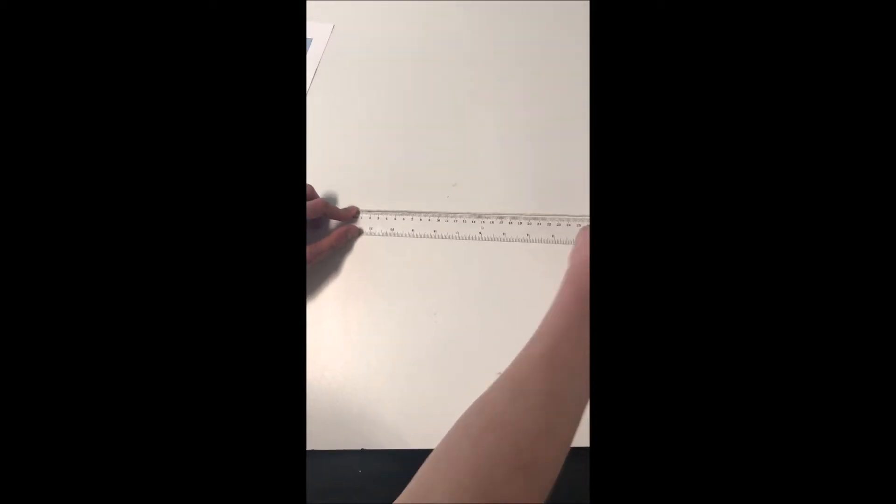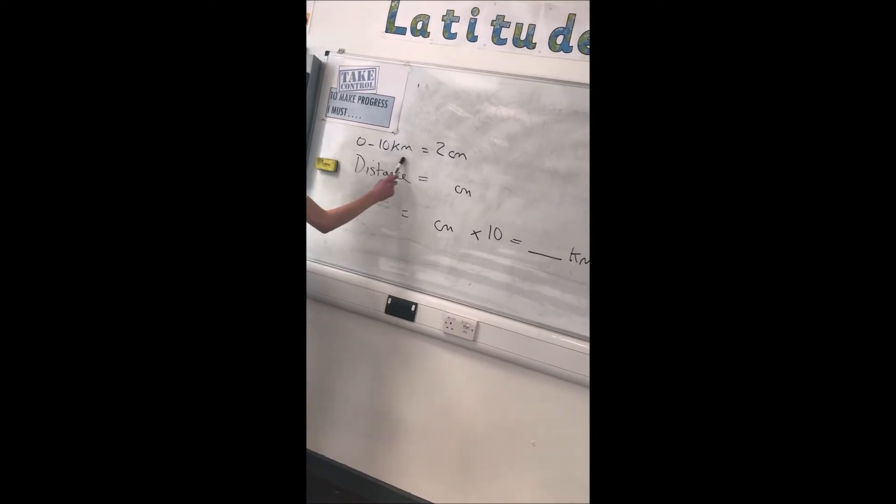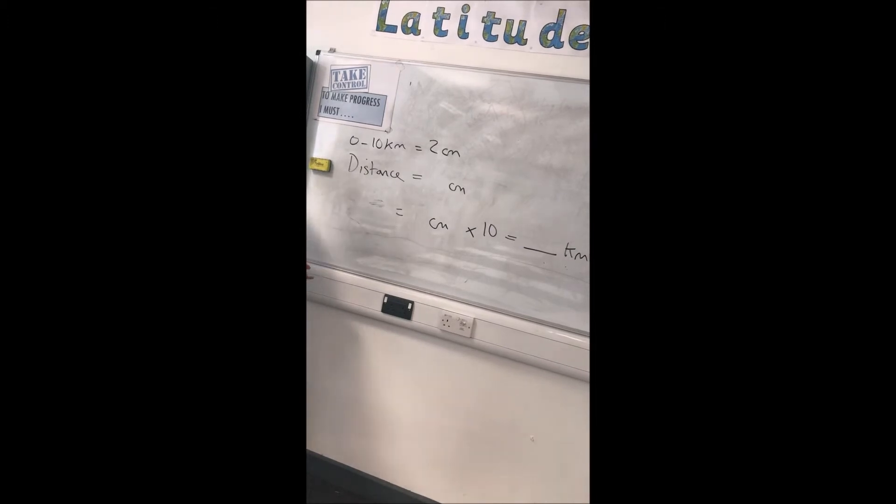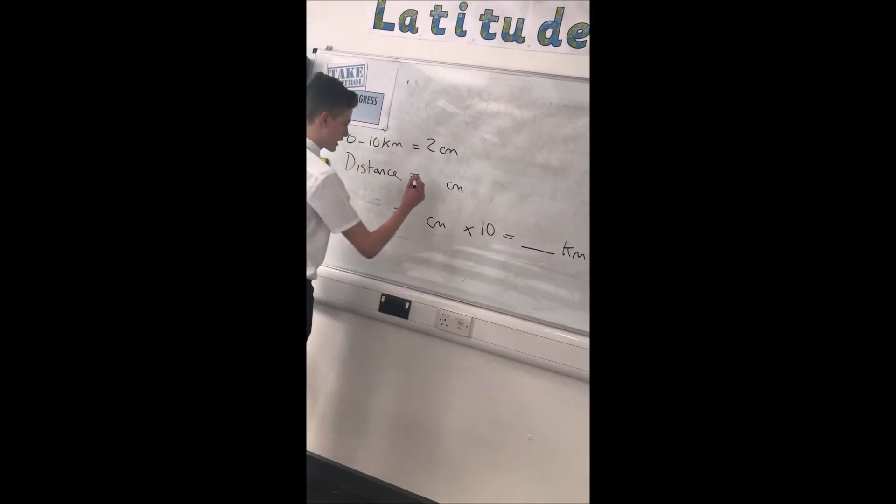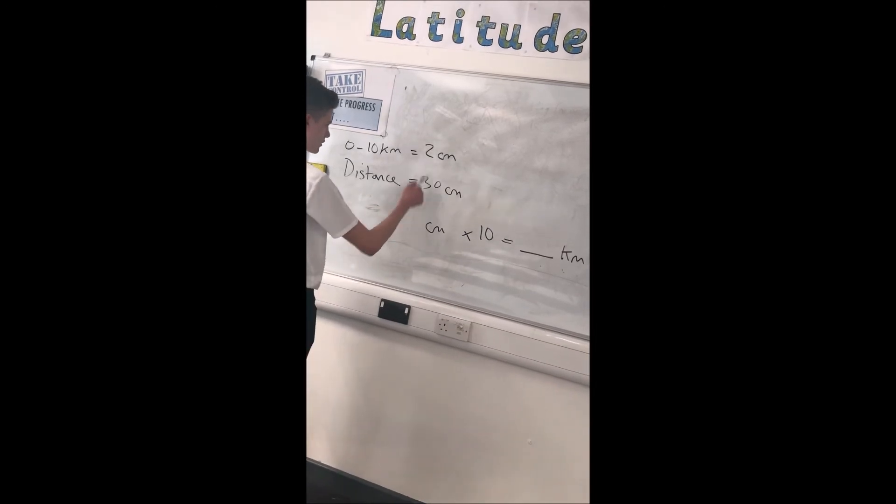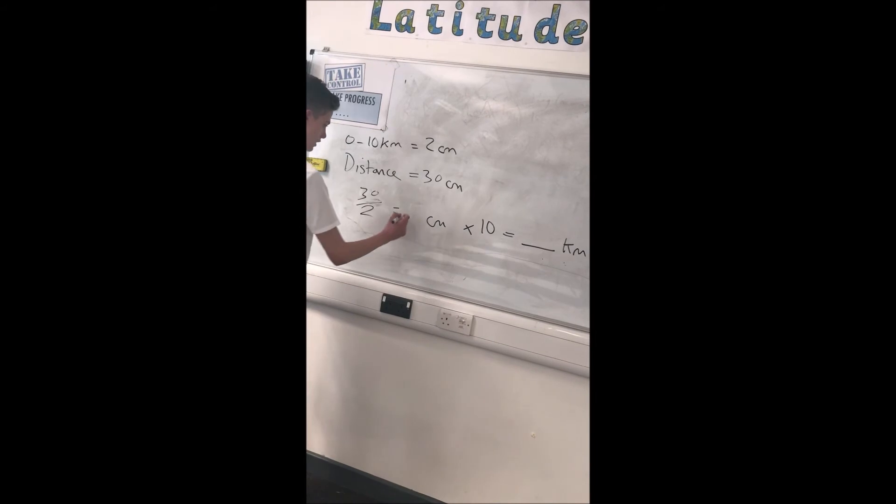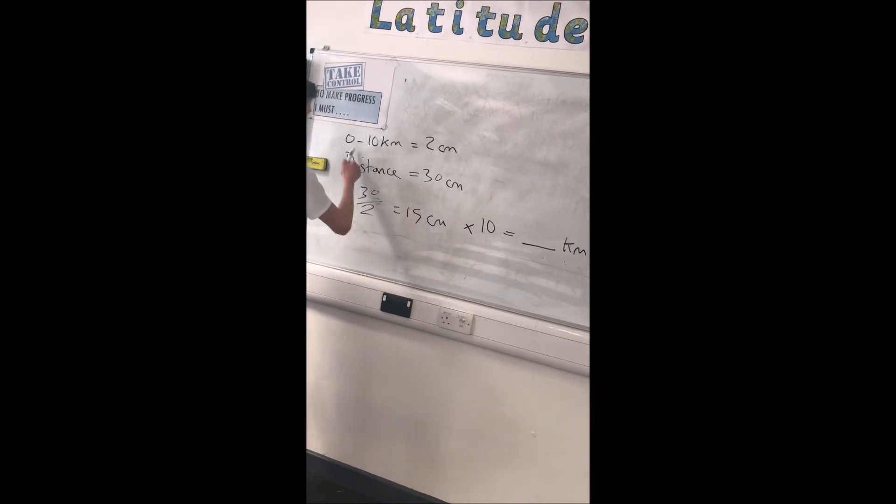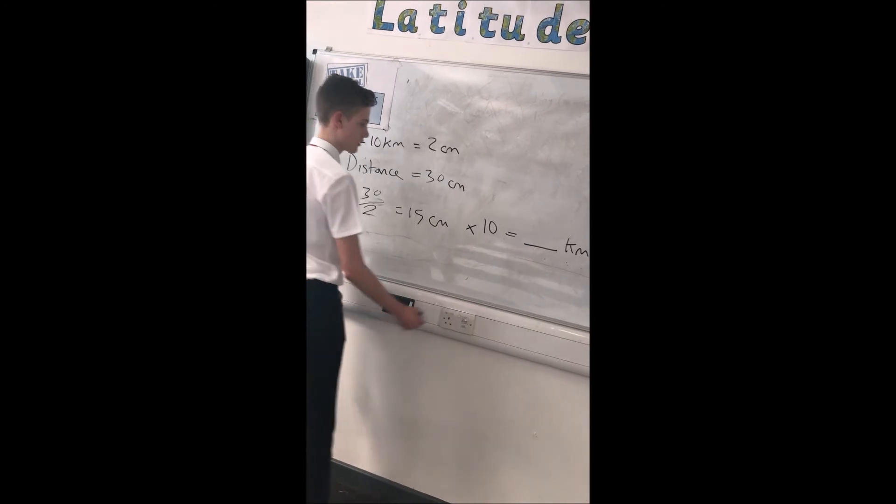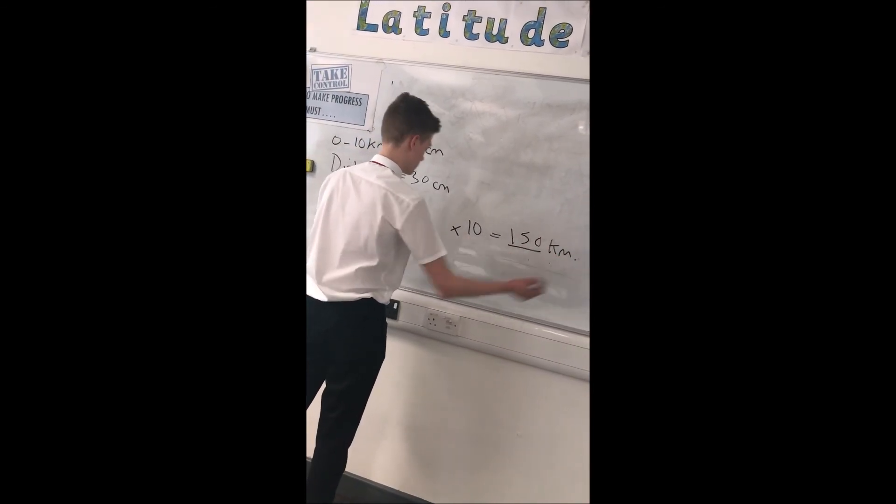So now we're back on the board again. We've wrote kilometers which is the key, which is two centimeters. Distance was 27 but we've rounded up because you might have missed some out, we're going to put it as 30. And here, because you have to do 30 divided by 2, so 30 divided by 2 equals 15 centimeters. And because the key is 10 kilometers, you now have to do 15 times by 10, which will give you an answer of 150 kilometers.